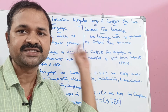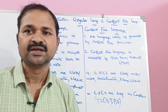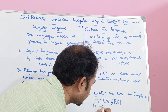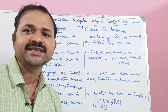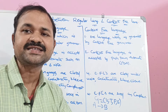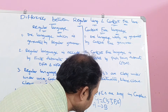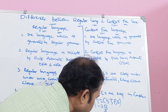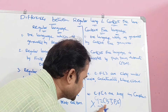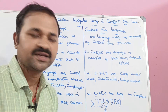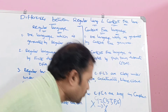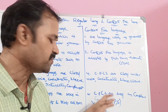Coming to the production rule, there is a difference between regular and context-free grammar. In regular grammar, the productions are of the form A → B, where A is a non-terminal. We have two types of regular grammar: left-linear grammar and right-linear grammar. In left-linear grammar, the leftmost symbol is always a non-terminal; in right-linear grammar, the rightmost symbol is always a non-terminal.